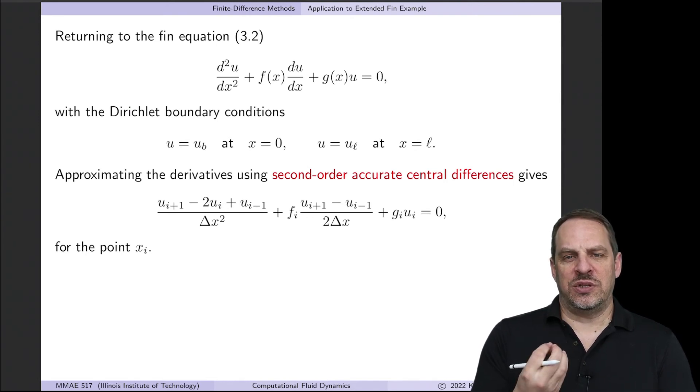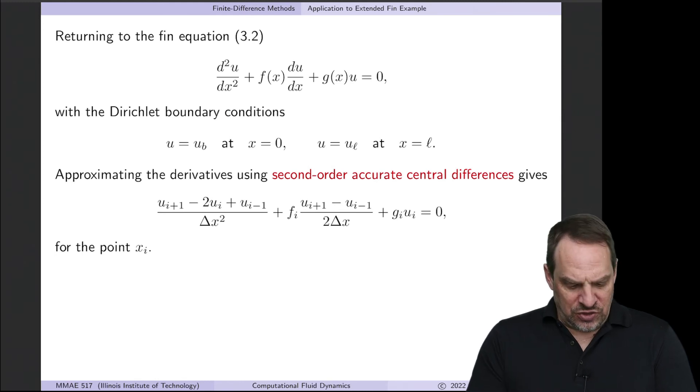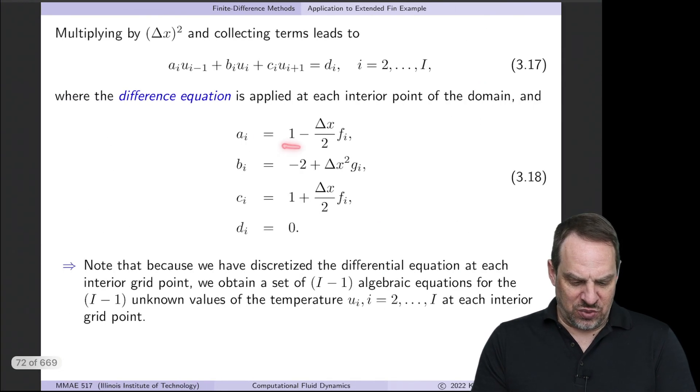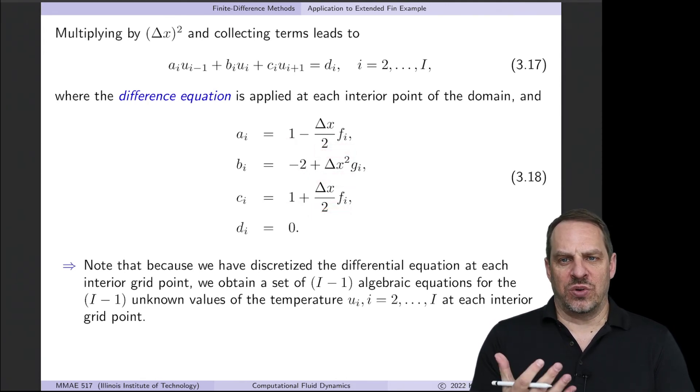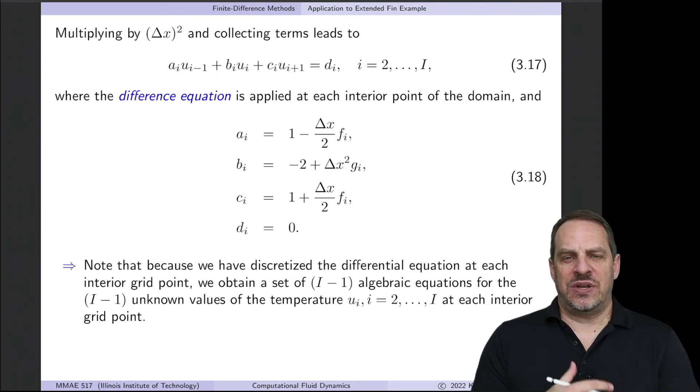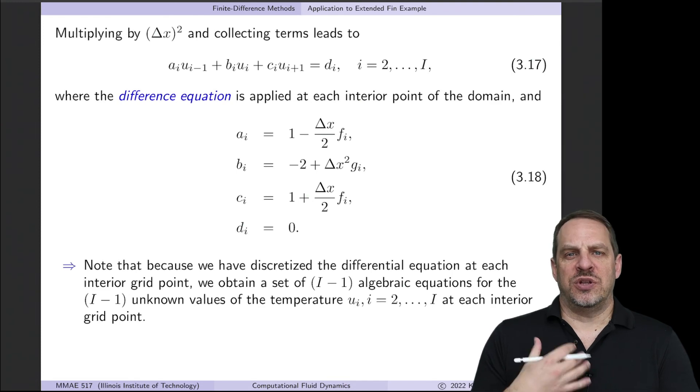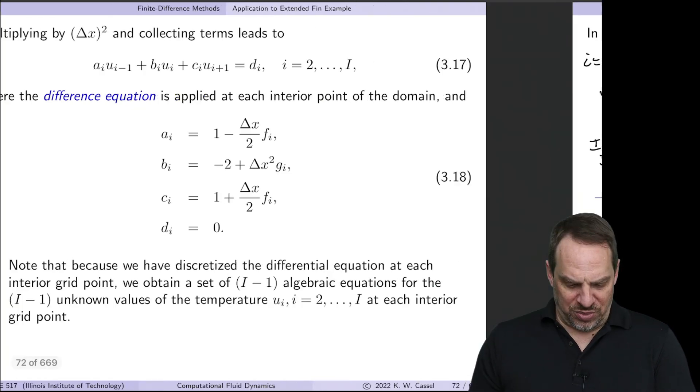So by multiplying through by delta x squared, that gets rid of this, so all these coefficients are order 1, and that's what we get here. So you can see 1 minus 2, 1, plus these small numbers. So the resulting a, b, and c are then order 1 size numbers. This isn't absolutely necessary, but it's just a good idea to be sure that as much as possible, the numbers that we put into our computer as inputs are order 1, if at all possible.